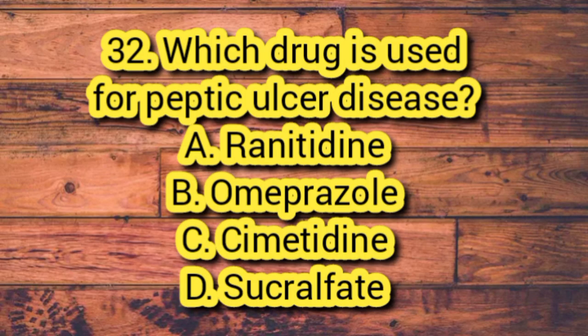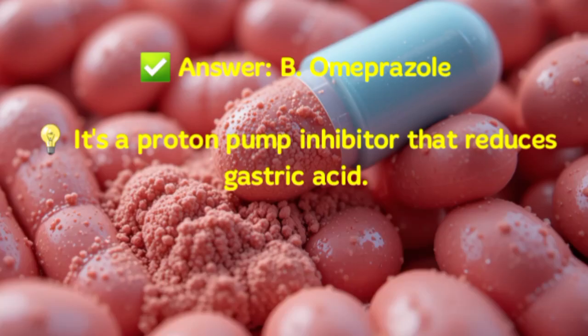Question 32. Which drug is used for peptic ulcer disease? A. Ranitidine. B. Omeprazole. C. Cimetidine. D. Sucralfate. Answer: B. Omeprazole. It's a proton pump inhibitor that reduces gastric acid.